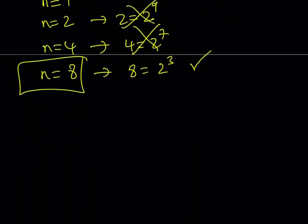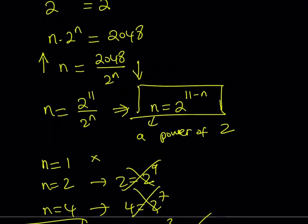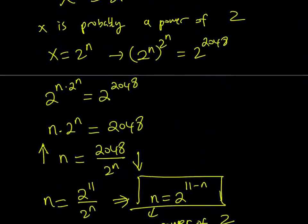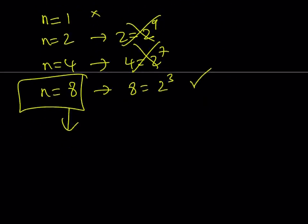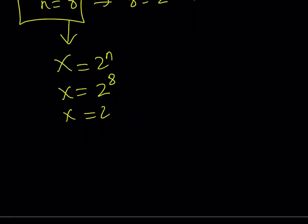But remember, we're not looking for n, we're looking for x. Therefore, what is the relationship between n and x? Let's see. Oh, we assume that x is equal to 2 to the power of n. So x is equal to 2 to the power of n. And since n is equal to 8, x becomes 2 to the power of 8. Therefore, x equals 256.